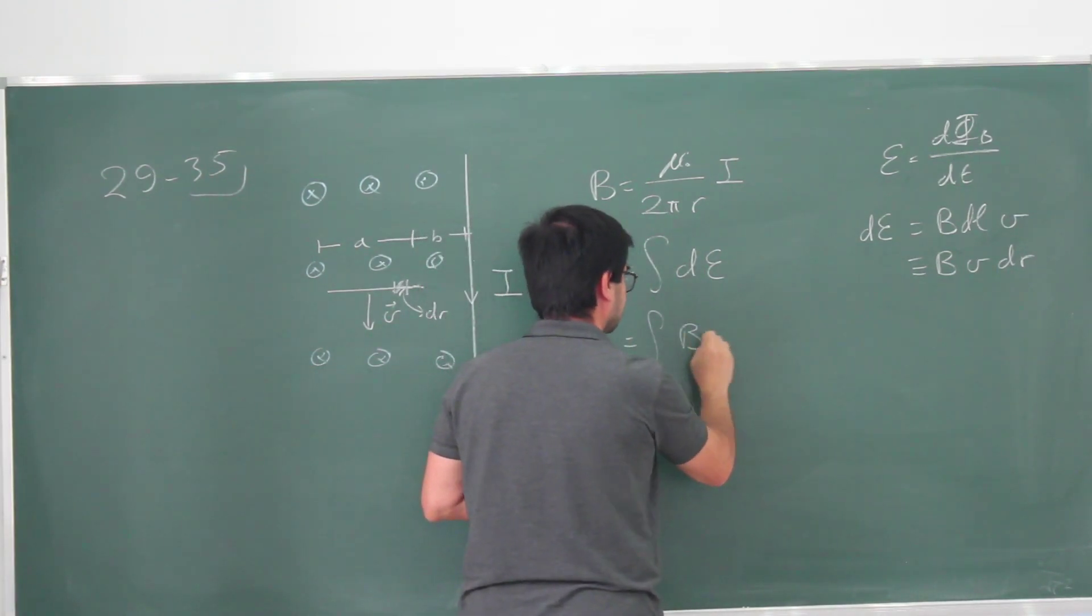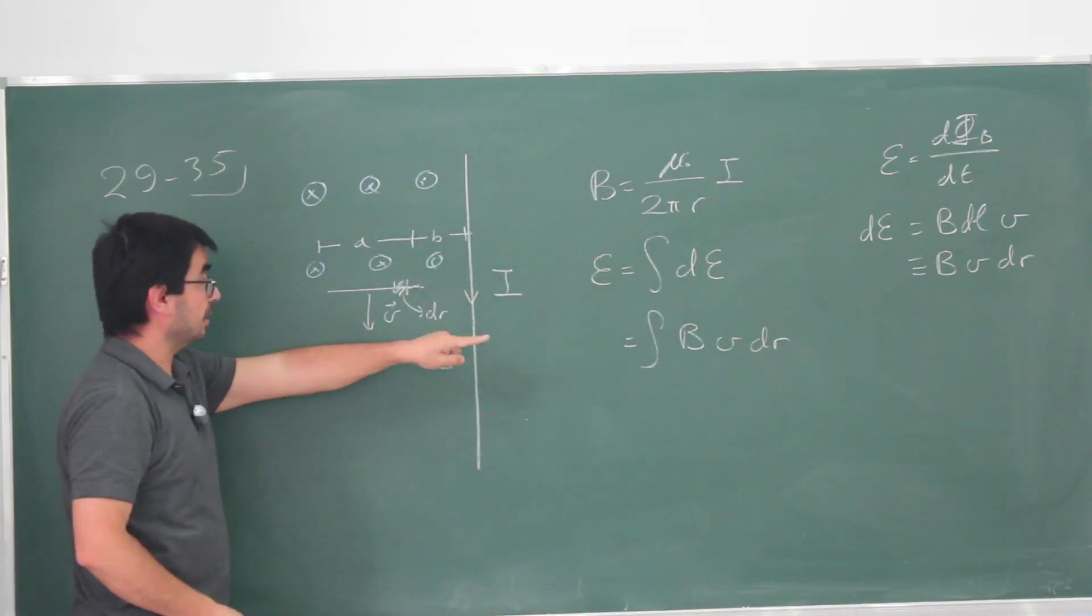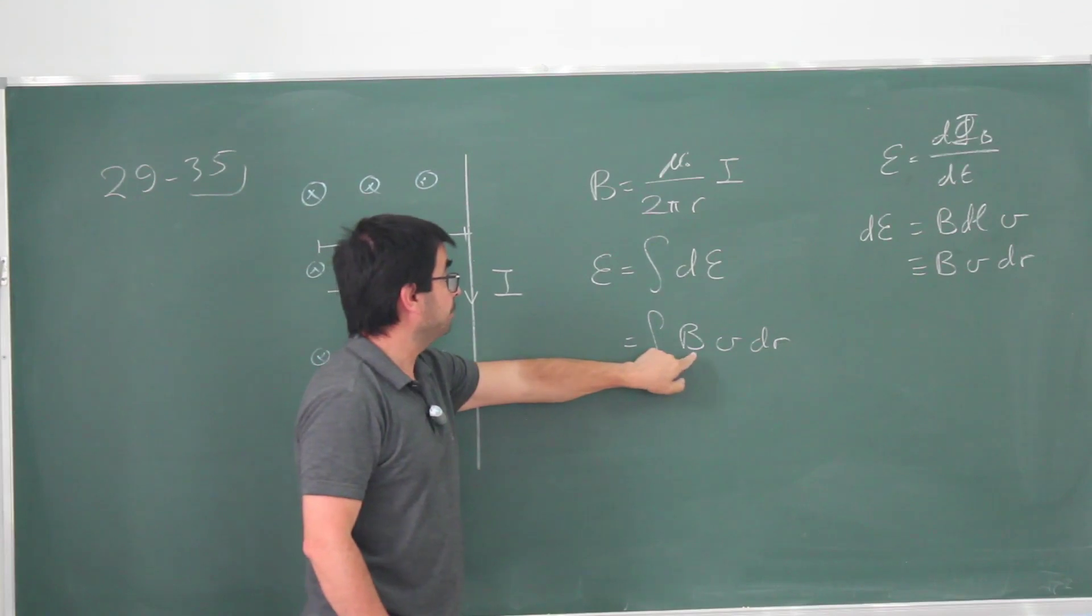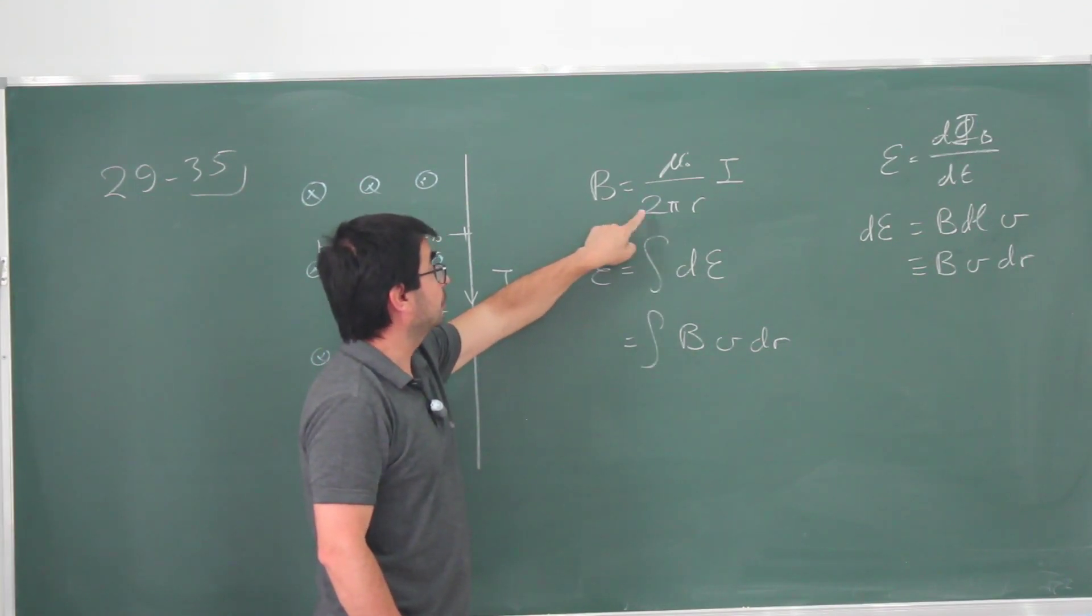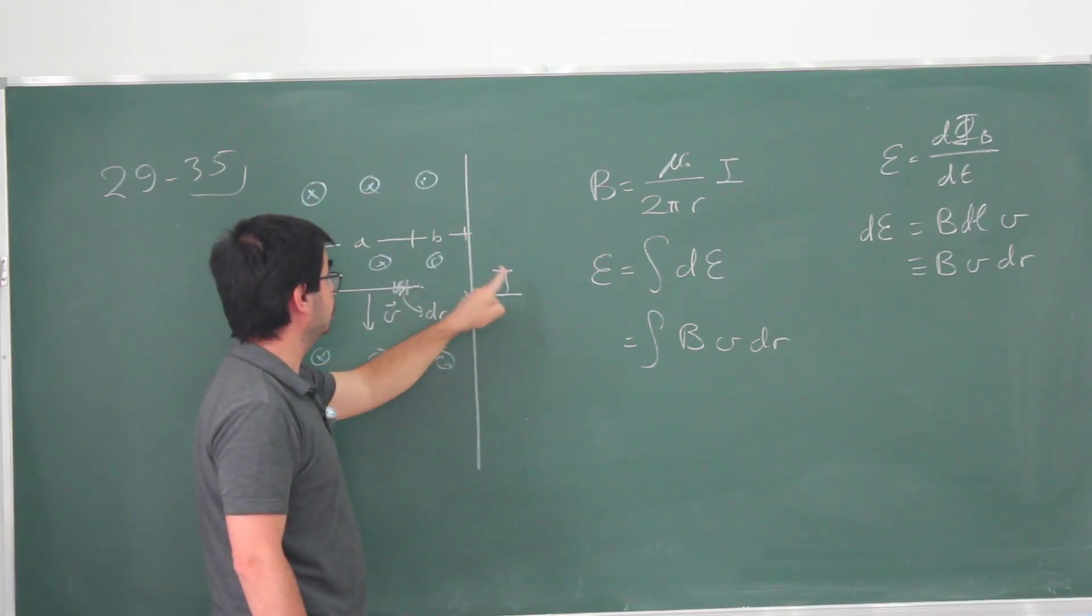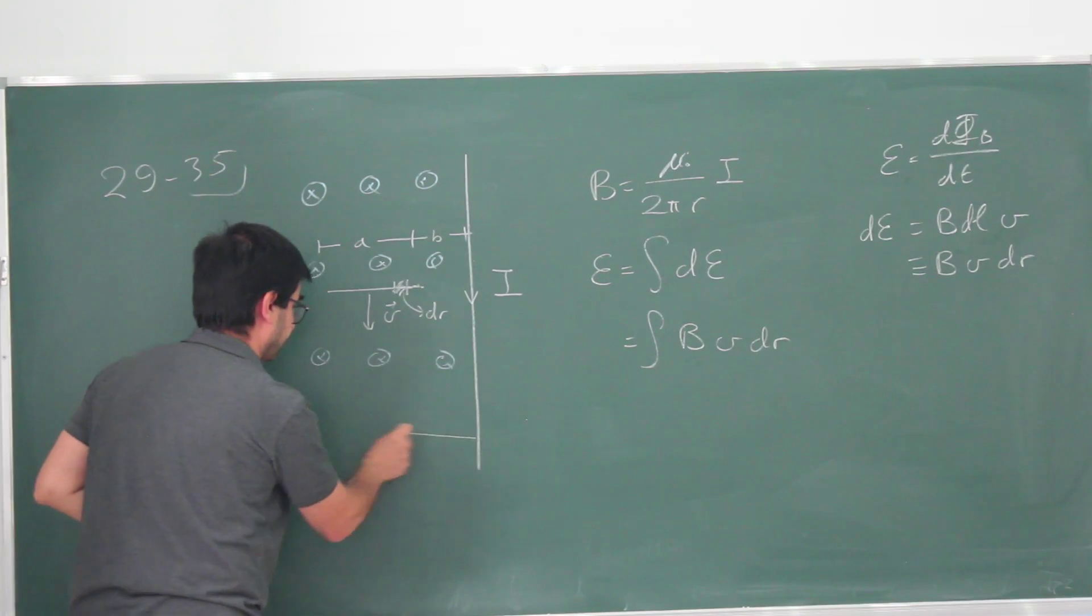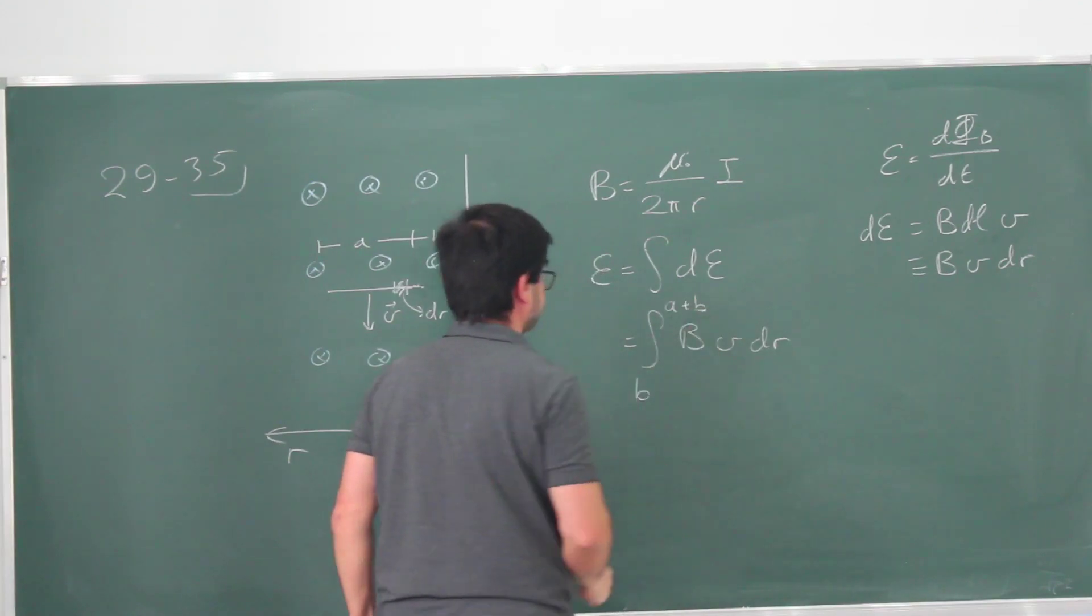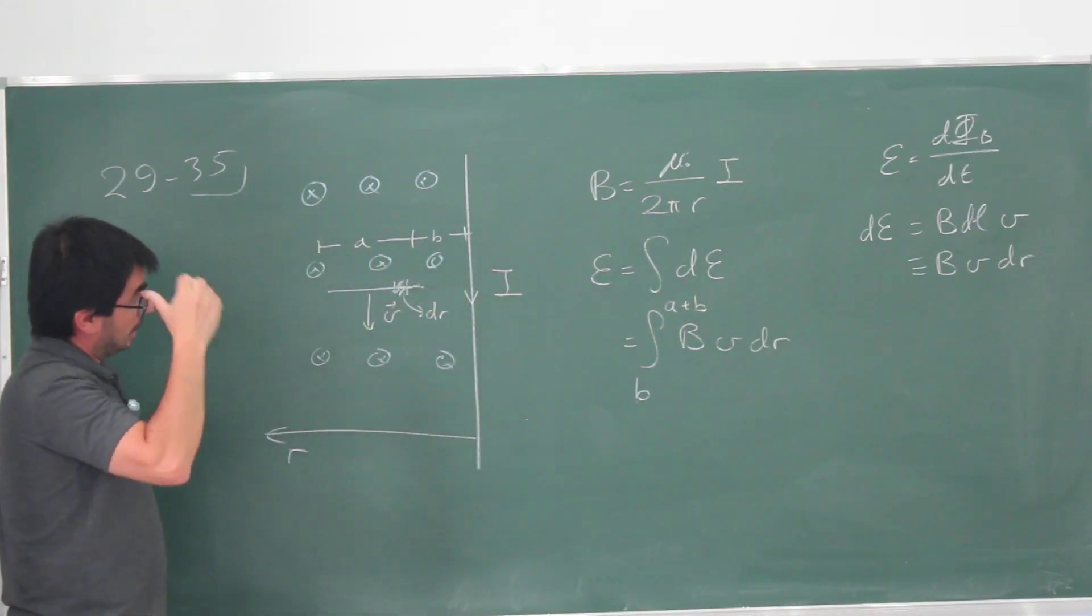Let's write this down. We are going to get B times V times dr. And this dr, as I change this variable dr, I'm going to move from this part of the wire to that part of the wire. Since I want to write this B in a simple form, this r is measured from the distance from the wire. Then I have to go from B to A plus B.